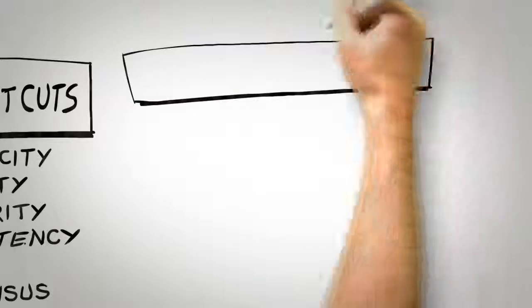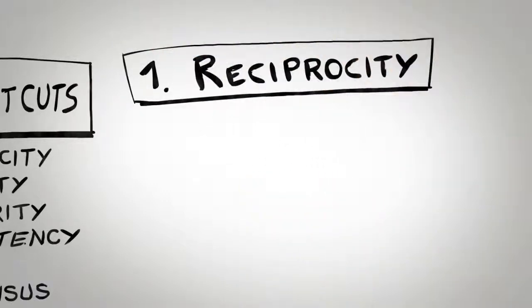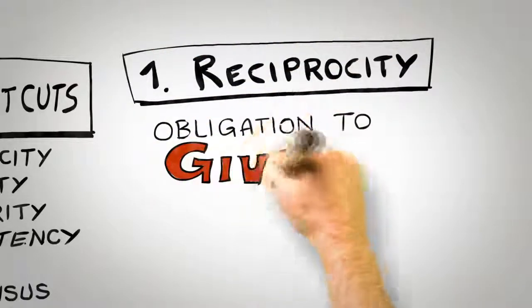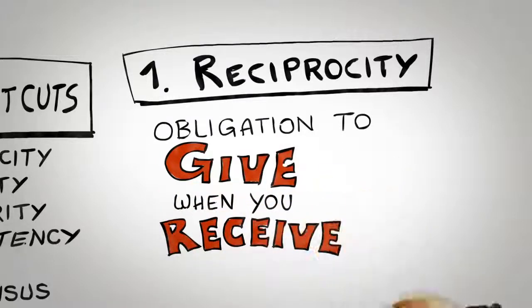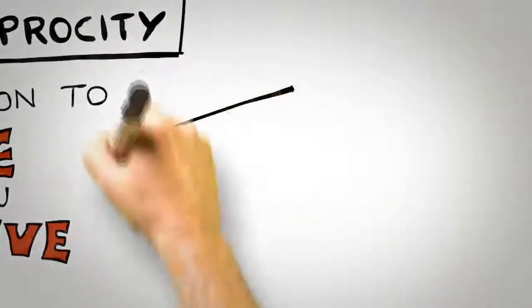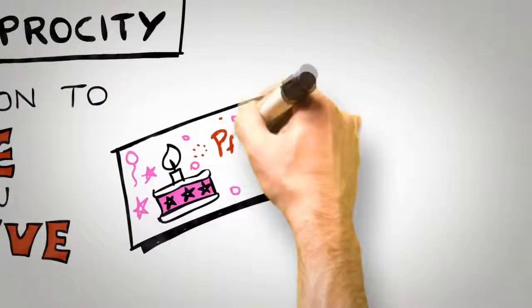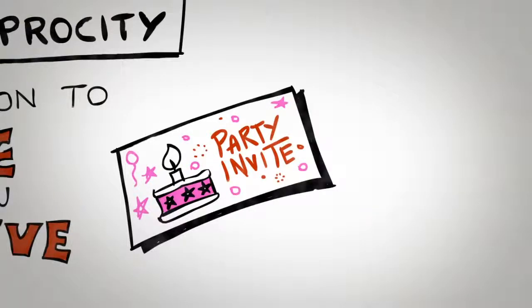The first universal principle of influence is reciprocity. Simply put, people are obliged to give back to others the form of behavior, gift, or service that they have received first. If a friend invites you to their party, there's an obligation for you to invite them to a future party you are hosting. If a colleague does you a favor, then you owe that colleague a favor.